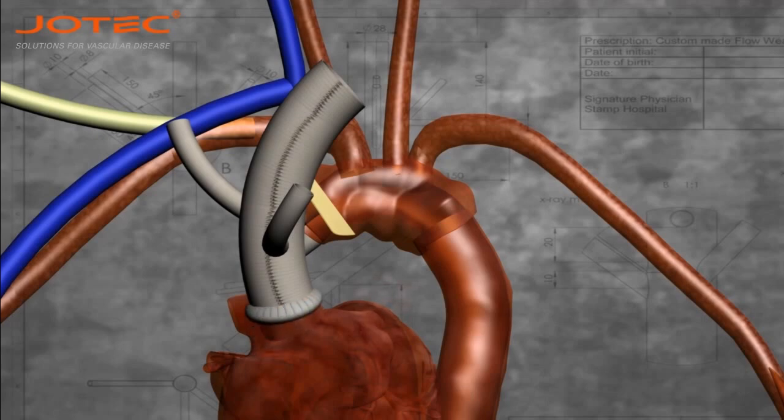Proximal anastomosis of the GPE graft at the level of the sinotubular junction of the aortic root, being careful to give the right angle to the prostheses. The branches of the anonymous trunk and left common carotid artery must be tilted towards the superior vena cava.